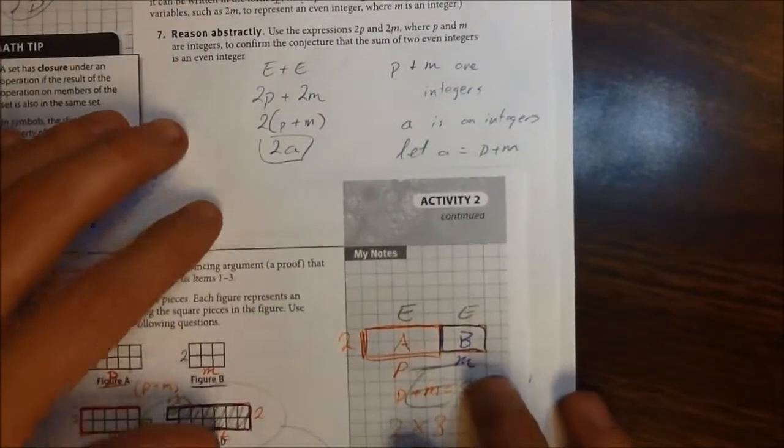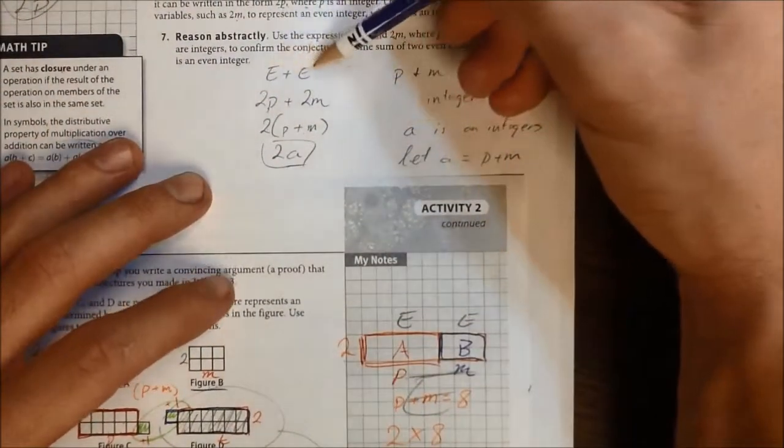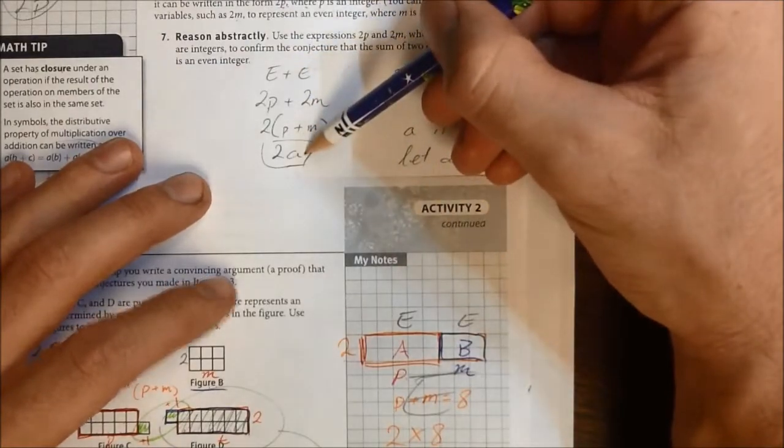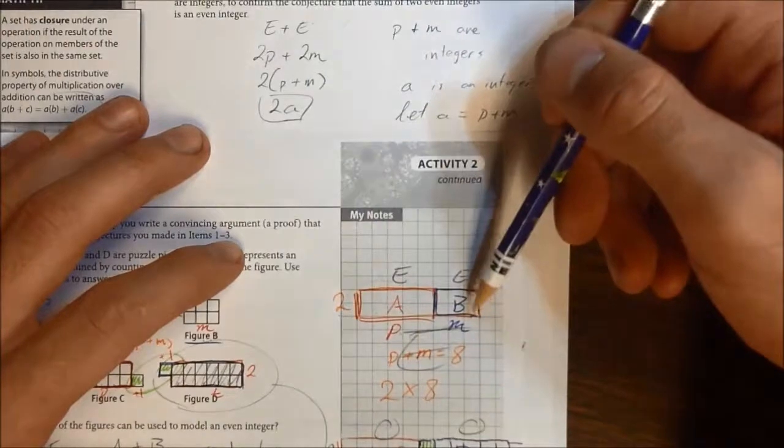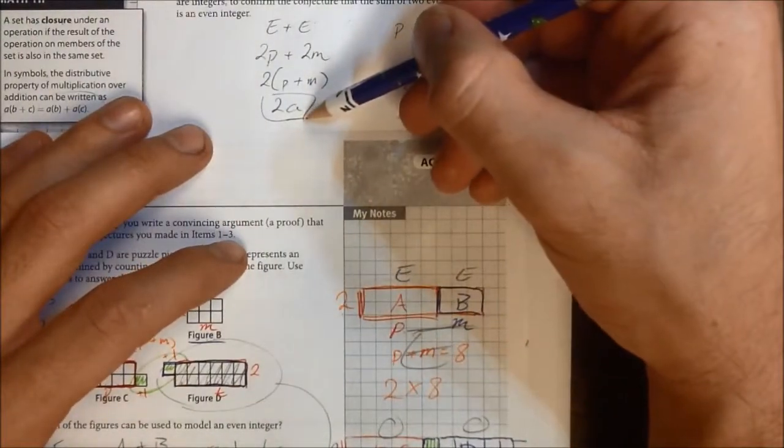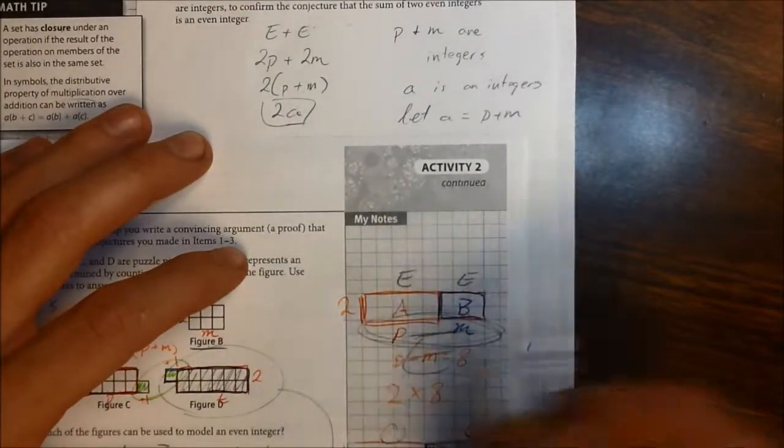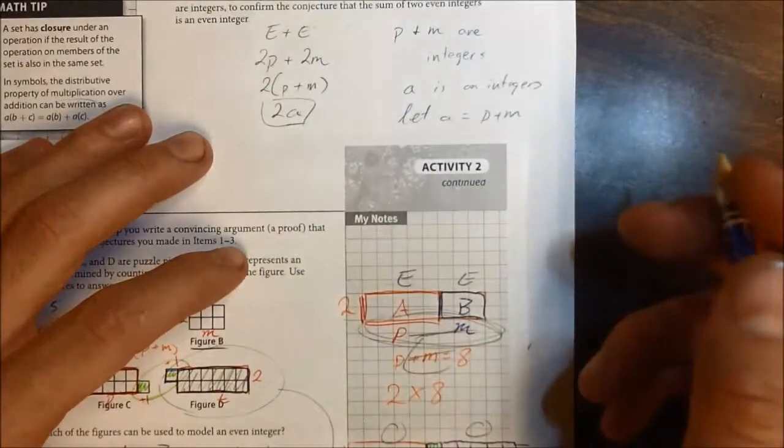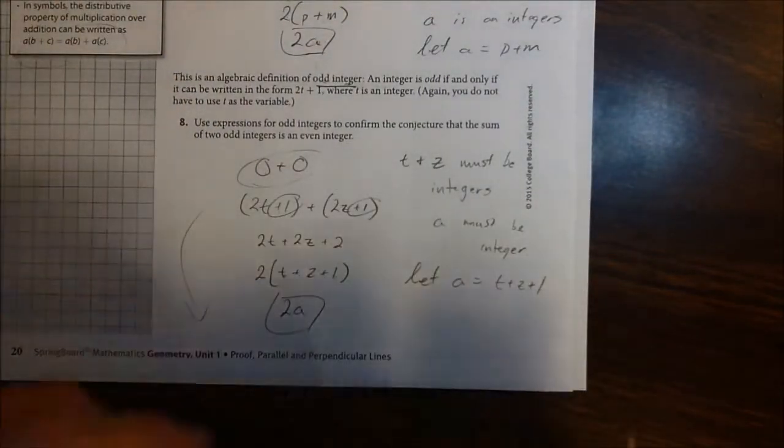So when we had even plus even, and that gave us another even, that was the same thing here. Even plus even, we got an even. So we're just creating a bigger rectangle where a, this value, is represented the new length, whatever p, m, n is.